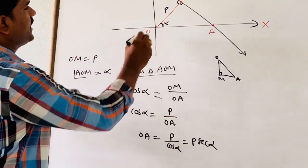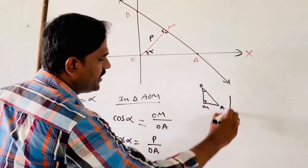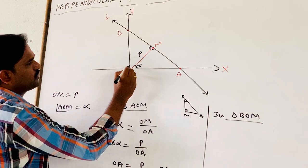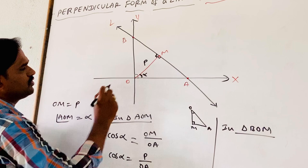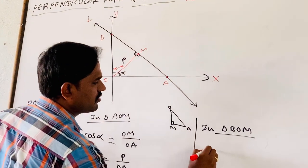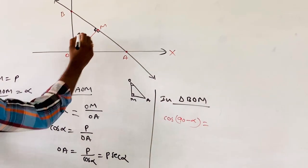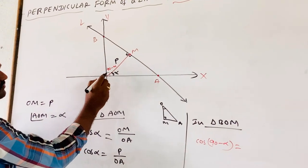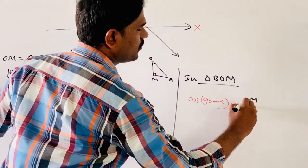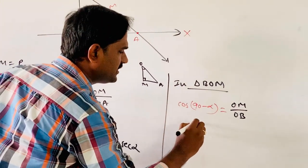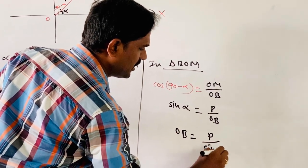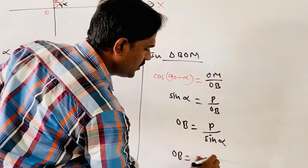Similarly, in triangle BOM, the angle at M is 90 degrees. Since angle AOM equals alpha, angle BOM equals 90 minus alpha. Taking angle 90 minus alpha at O, cos(90 minus alpha) equals adjacent over hypotenuse, which is OM over OB. Since cos(90 minus theta) equals sin theta, we get sin alpha equals P over OB. Therefore OB equals P over sin alpha, or P cosecant alpha.